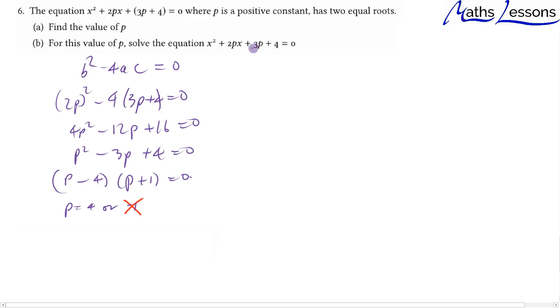Now we want to solve the equation where p equals 4, so we've got x² + 8x + 16 = 0.